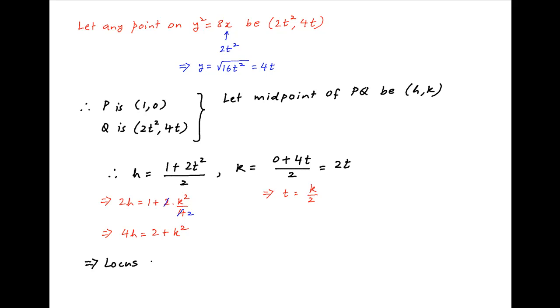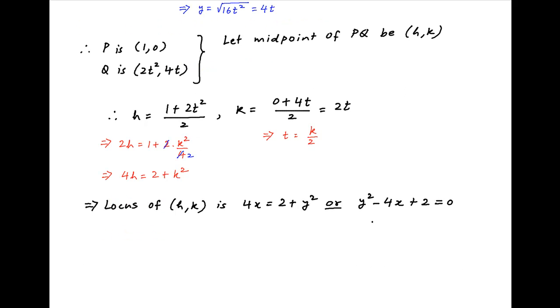Therefore, the locus of the midpoint of PQ h,k is obtained by replacing h with x and k with y which is 4x is equal to 2 plus y square or y square minus 4x plus 2 is equal to 0 which is the required answer.